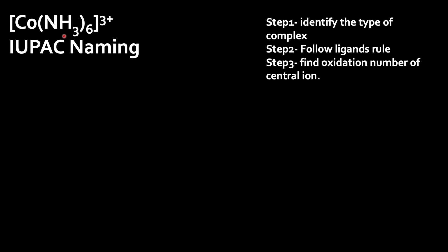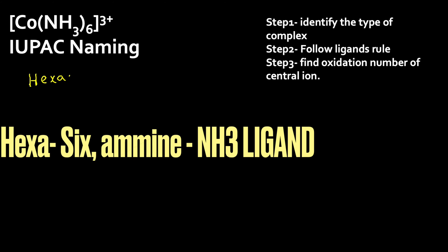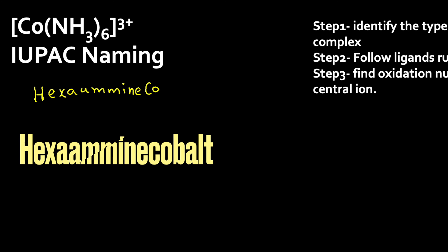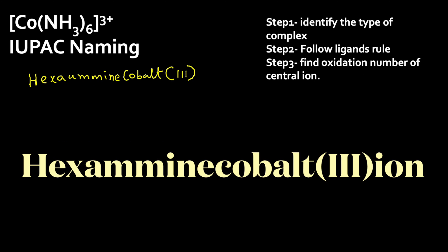Following the ligand's rule, the ligand is NH3 and there are 6 ligands present, so we use the prefix 'hexamine' — NH3 is called amine. Since it is a cationic complex, we write the central atom as its elemental name, cobalt, followed by the oxidation number in parentheses. Therefore, the IUPAC name for [Co(NH3)6]³⁺ is hexaminecobalt(III) ion.